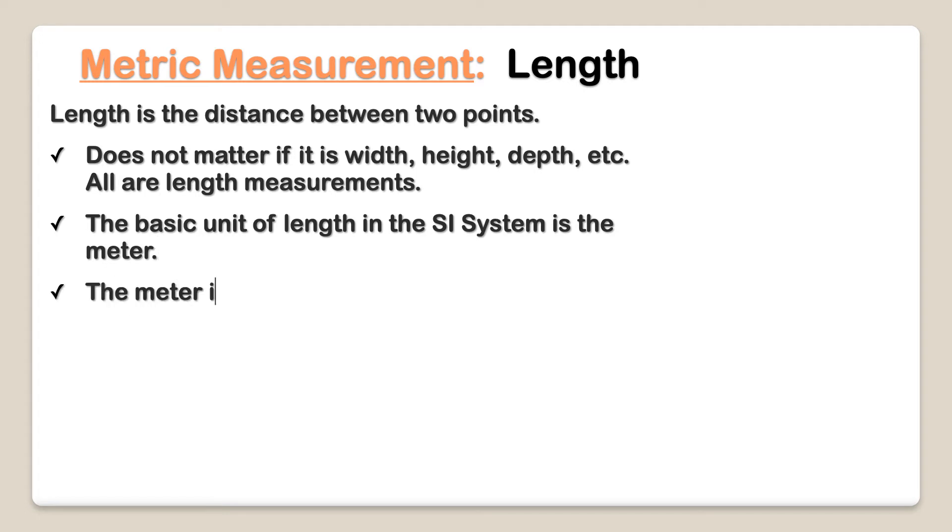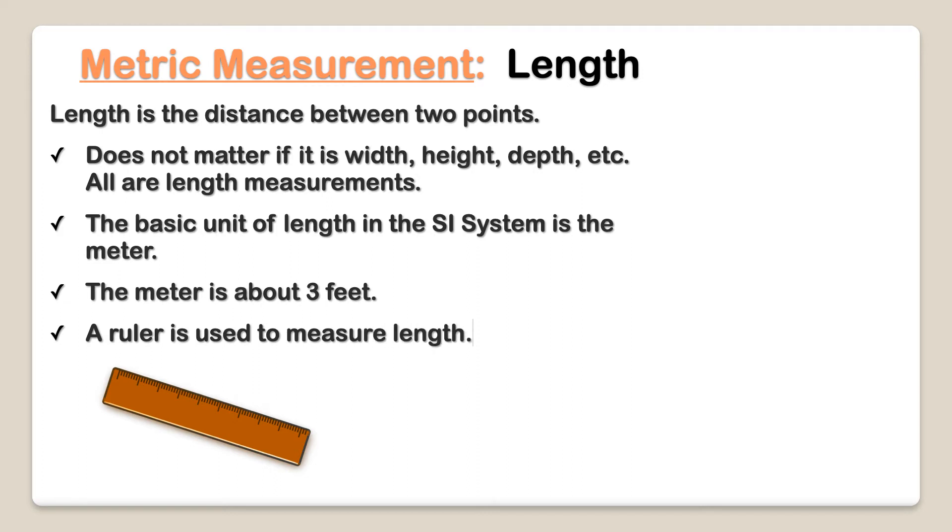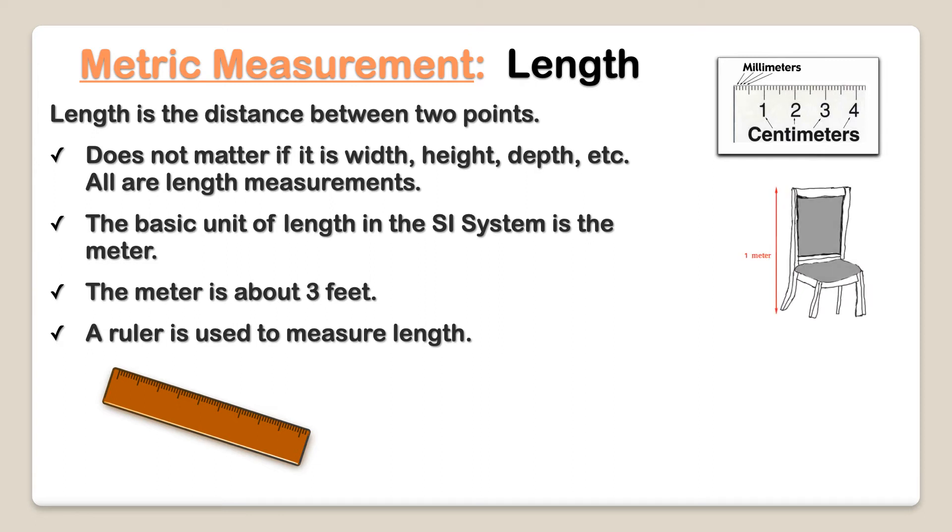The meter is about three feet. A ruler is used to measure length. Let's look at some meter units. The millimeter and centimeter, they're very small, aren't they? The meter is about the size of a chair. Kilometer is about the size of 10 or more airplanes.